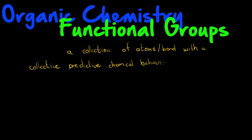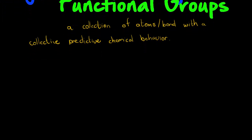Okay so for now this might sound somewhat unclear, but basically what we're trying to say is that it's a collection of atoms, and if these atoms bond in a certain way then we can expect the following chemical behaviors — like for example, is it a liquid at room temperature? What is its boiling point? Does it increase when there's more of these bonds? Things like that.